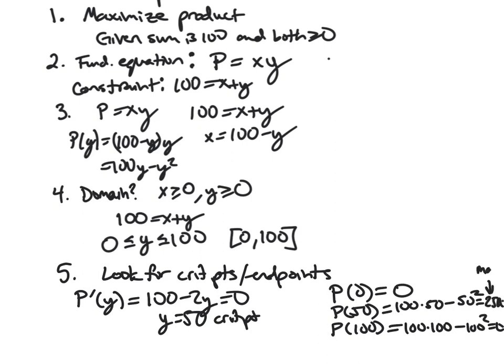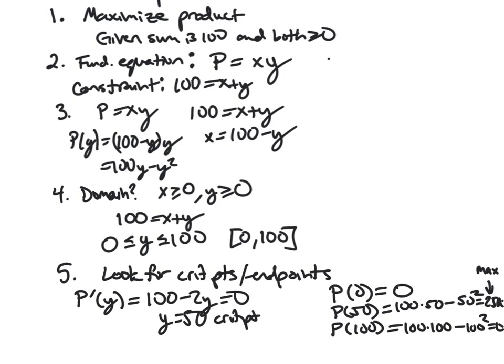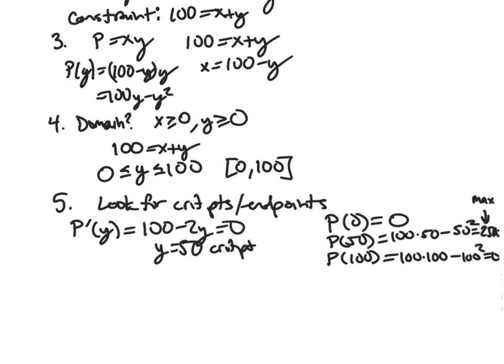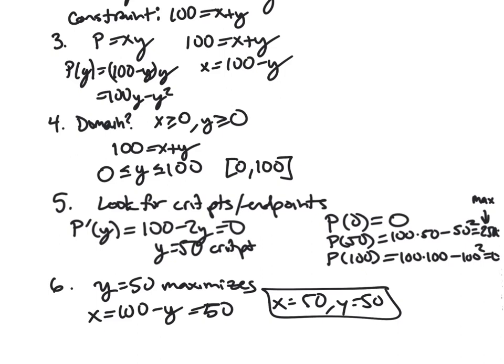Clearly our max, since that's a lot bigger than zero. And so now we were asked initially for the two numbers. And so we just found that y equals 50 maximizes. And then we just plug in. x is 100 minus y. And so it's going to be 50 as well. And so x and y both being 50 is what we want to choose to add up to 100 and maximize the product.